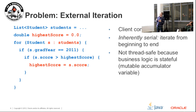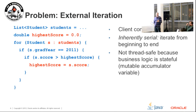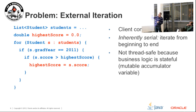The problem is that we are controlling the iteration - we have the for loop in our code - and that makes it inherently serial. We can't simplify decomposing it into parallel threads in a simple way. The other problem is that we're not thread safe, because we've got a mutable variable, 'highScore', which we're changing. If we wanted to break it up into multiple threads, that becomes a problem.